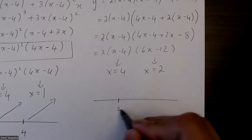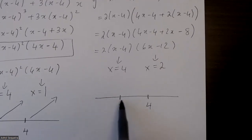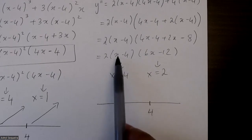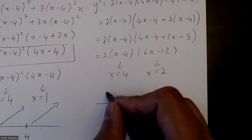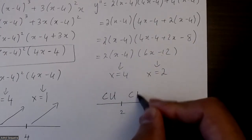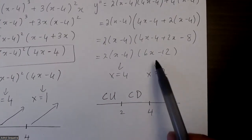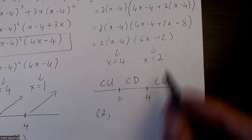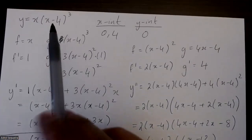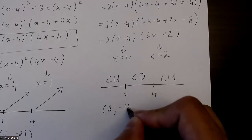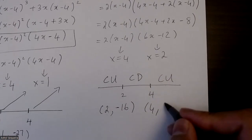I'll put x = 2 and x = 4 on a number line to find concavity intervals. Subbing in 0 into the second derivative gives negative times negative, which is positive — so concave up. Subbing in 3 gives negative times positive — concave down. Subbing in 5 gives positive times positive — concave up again. The inflection point at x = 2 gives y = negative 16 when subbed into the original equation, and at x = 4, y = 0.